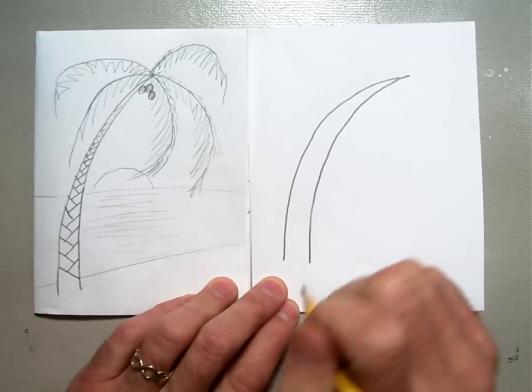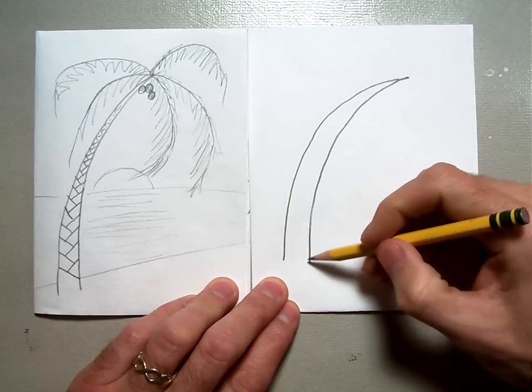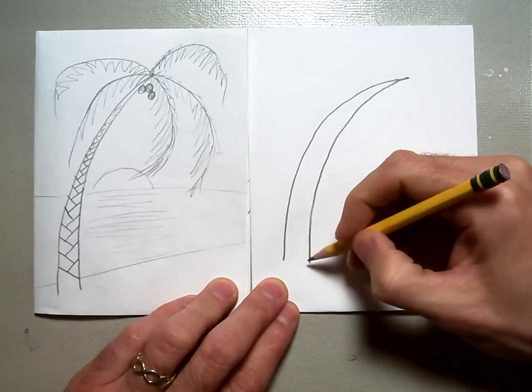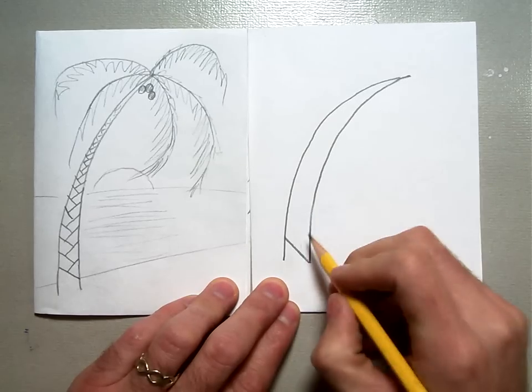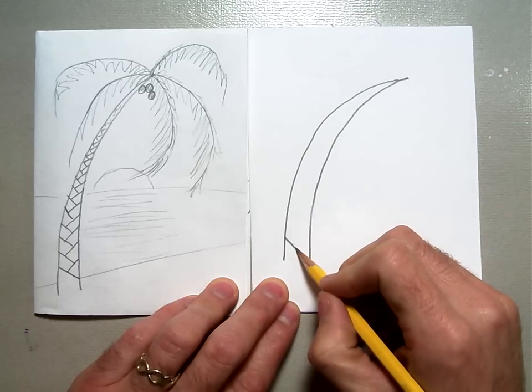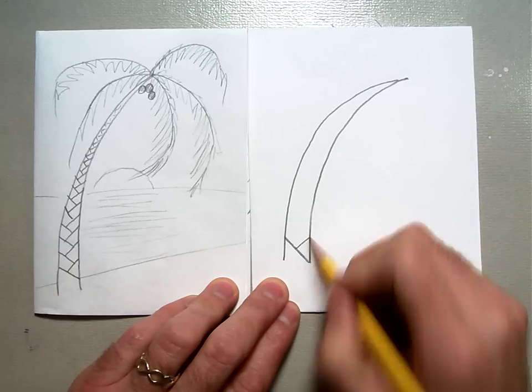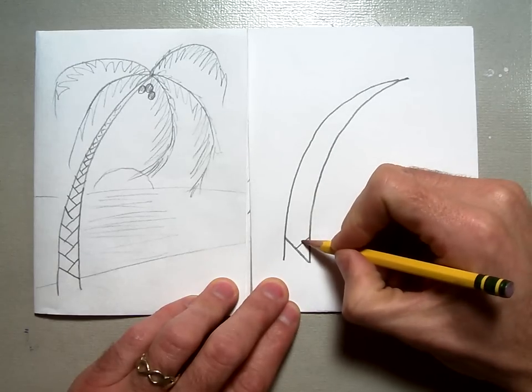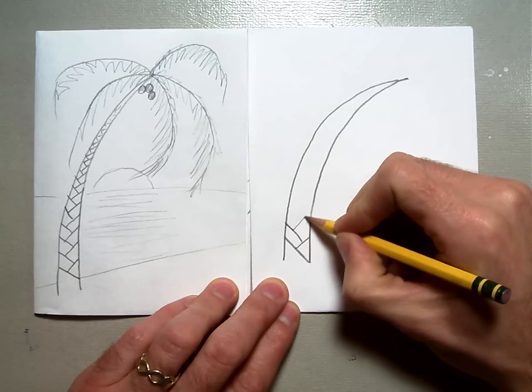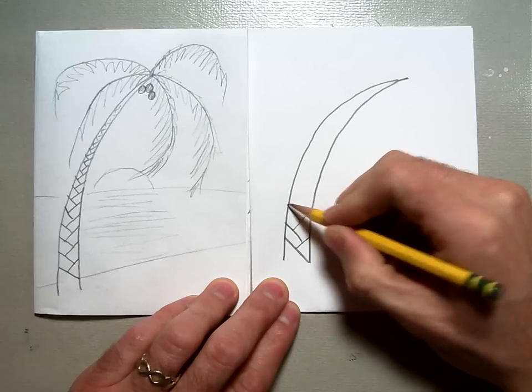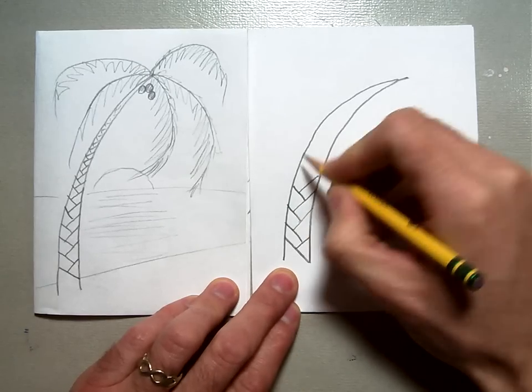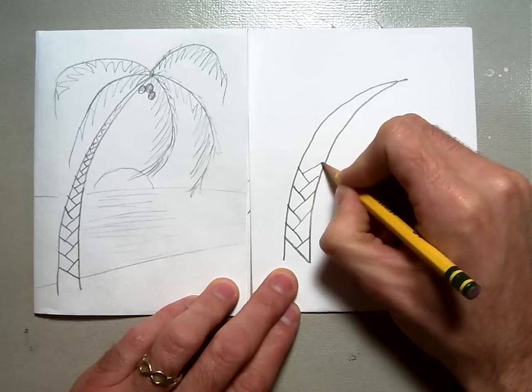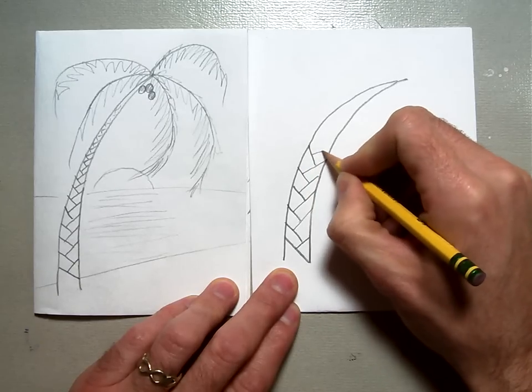To put the texture on the trunk, it's super easy, and once you know it's pretty fun to do. I take a diagonal line from one side and go to the other like that, and then a diagonal line from the middle of that diagonal line out to the other side, and then you just keep going with that pattern. Going from the middle out to the other side, this is going to give you the braided texture for a palm tree.